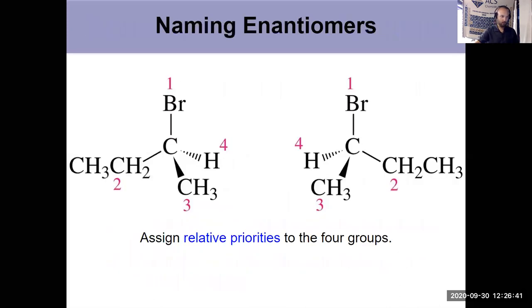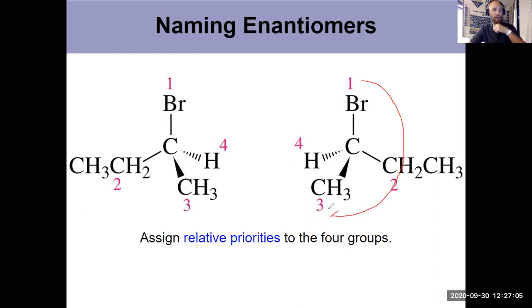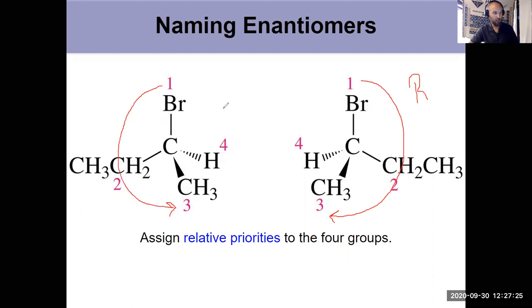Here are two enantiomers with their assigned priorities: bromine is priority one, ethyl is priority two, methyl is priority three. Drawing the arrow from one to two to three, priority four is already on the dashed wedge, and going clockwise — this is the R isomer. For the other enantiomer: going from one to two to three, priority four is on the dashed wedge, going counterclockwise — it must be S. We're using the same priority rules as in video one for assigning E or Z.